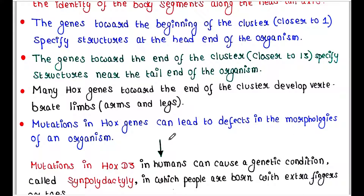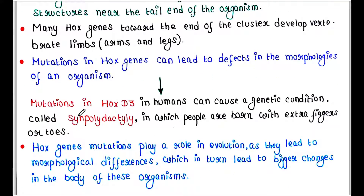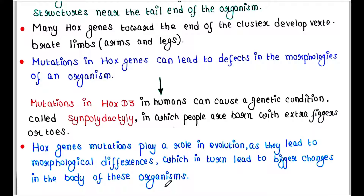Mutations in Hox genes can lead to defects in the morphology of an organism. For example, mutations in Hox D3 in humans can cause a genetic condition called synpolydactyly, in which people are born with extra fingers or toes. Hox gene mutations also play a role in evolution, as they lead to morphological differences which in turn lead to larger changes in the body of organisms.